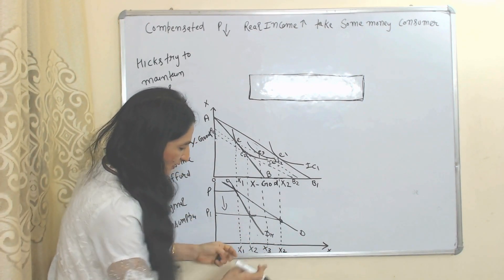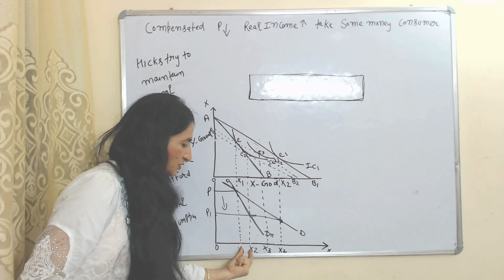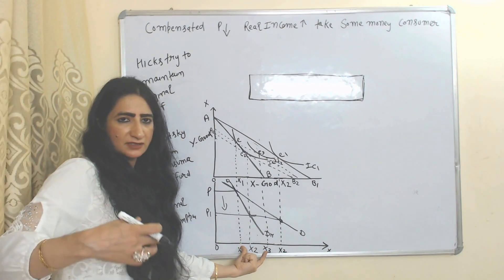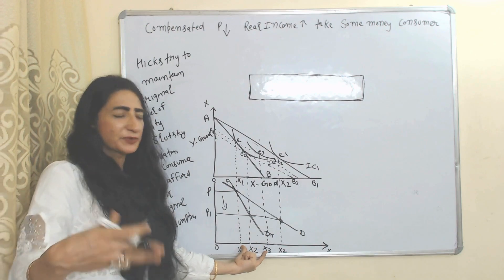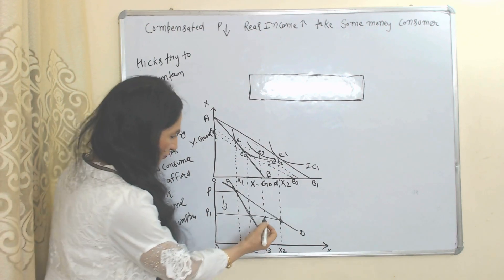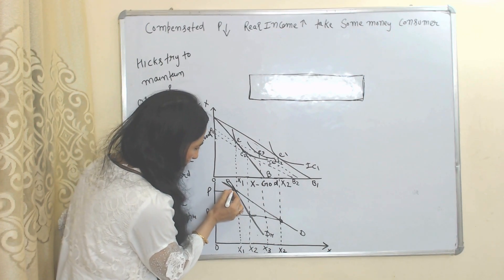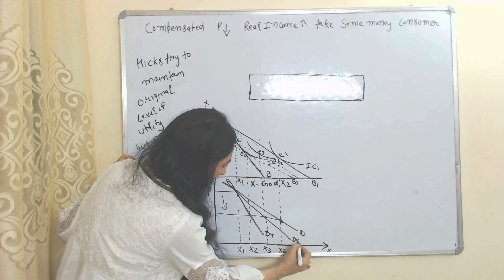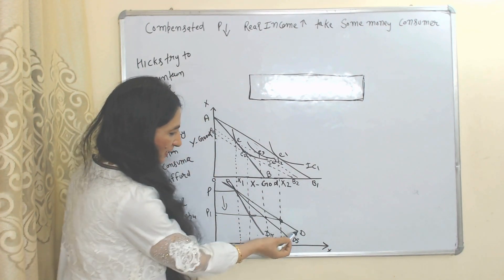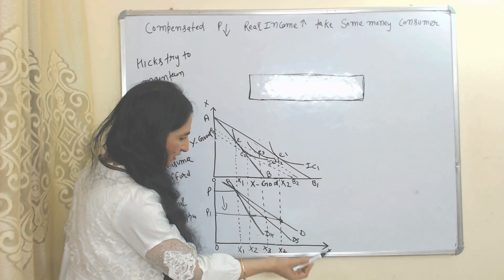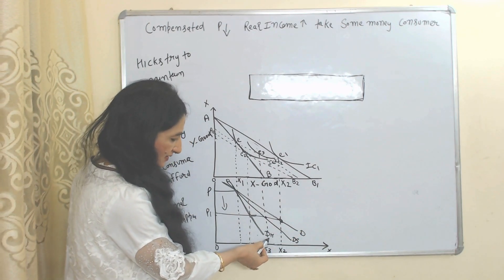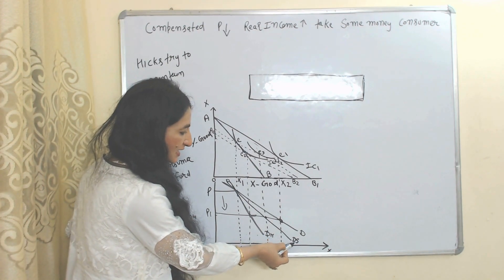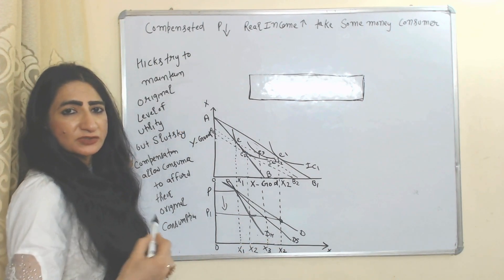According to Slutsky, the substitution effect is larger than that of Hicks. Here we have DM as the normal or Marshallian demand curve, DH as the Hicks compensated demand curve, and DS as the Slutsky compensated demand curve. Slutsky's substitution effect is clearly greater as compared to Hicks'.